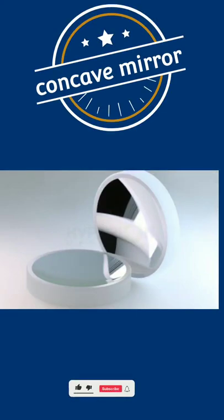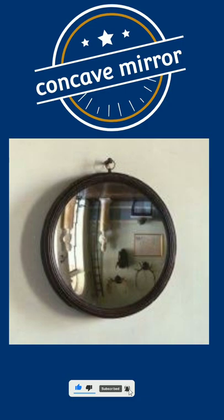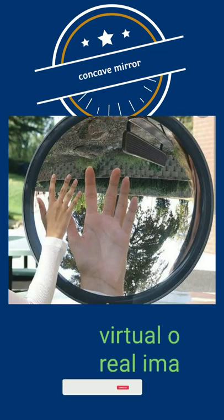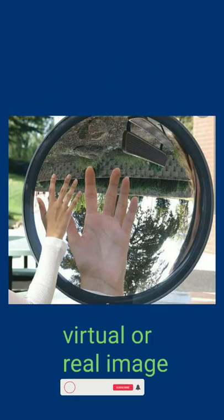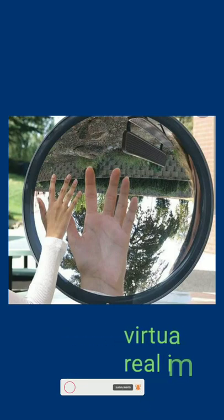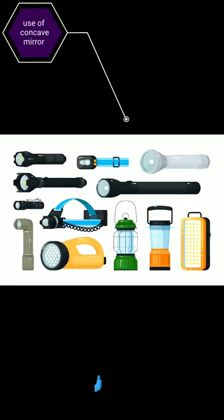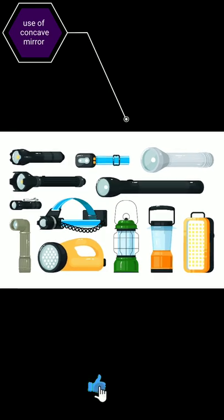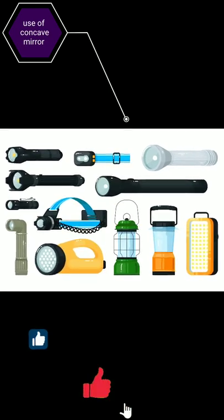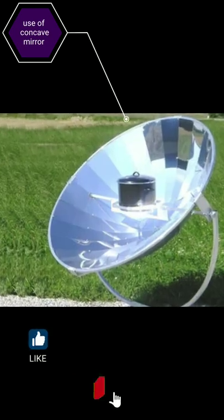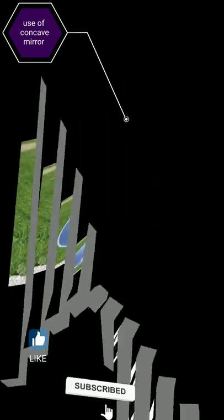Concave mirrors are spherical mirrors in which the reflecting surface curves inward. A concave mirror forms a virtual or real image depending on the position of the object. Uses of concave mirrors include use in torches and solar cookers.